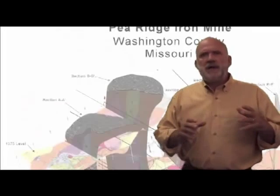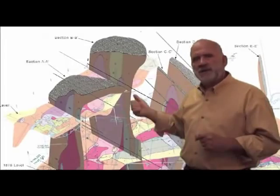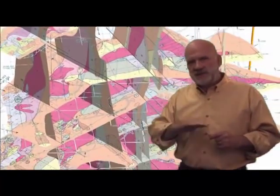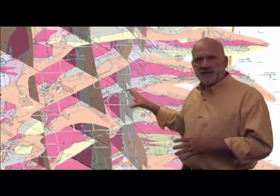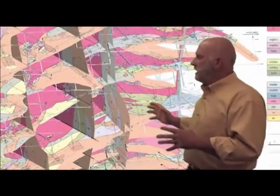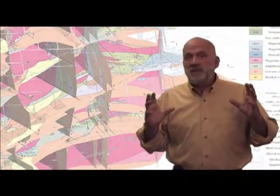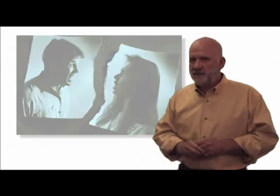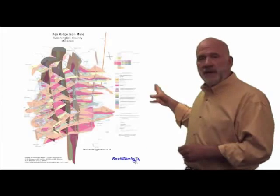Now, to create a conventional computer model that approximates this geology and then to be able to slice it in order to produce these rotating cross sections and mine level maps would be, well, let's just say it would be difficult and expensive — like Ferrari expensive, New House expensive, Ugly Divorce expensive. Or, we could just draw the cross sections using our well-evolved neural networks, and bingo, we've got a product.